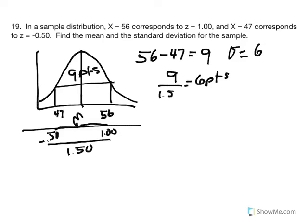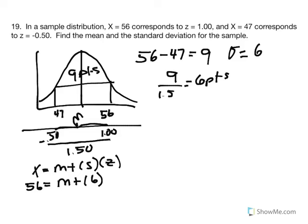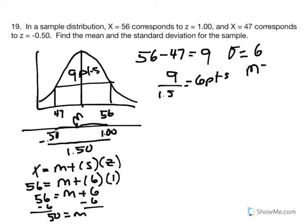Next, we find the mean using the equation x equals m plus standard deviation multiplied by z. Working with the score of 56: 56 equals the mean plus 6 times 1, so 56 equals m plus 6. Subtracting 6 from both sides gives us m equals 50. The sample mean is 50.